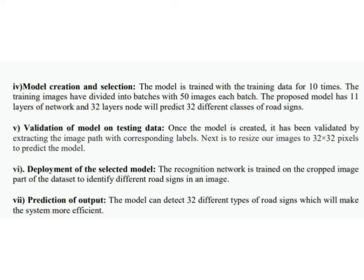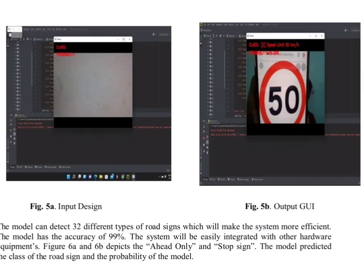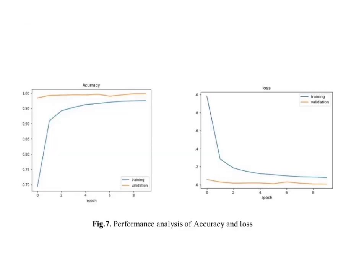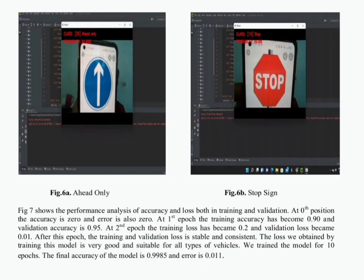Finally, for prediction of output: the model can detect 32 different types of road signs, making the system more efficient. The input design and trained pickle model is shown in the figure. The image is sent through the model to predict the output, and the model output is also sent to further processes to alert the driver via LCD display and recognize the signs. For the purpose of demonstration, we used PyCharm software and Python 3.7. As you can see in the images, the model has 99% accuracy. The system can easily integrate with other hardware equipment. The figures show it correctly identifies the 'ahead only' and 'stop' signs, along with the predicted class and probability.